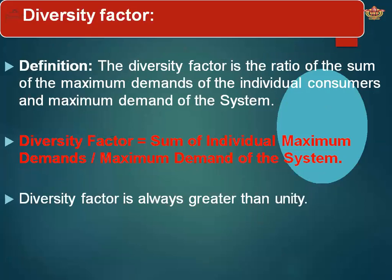The diversity factor is the ratio of the sum of individual maximum demands of consumers to the maximum demand of the entire system. For example, considering 30 days: the maximum demand for each individual day is summed, and divided by the system's overall maximum demand — that ratio is the diversity factor. Mathematically: diversity factor = sum of individual maximum demands / maximum demand of the system. Diversity factor is always greater than unity.